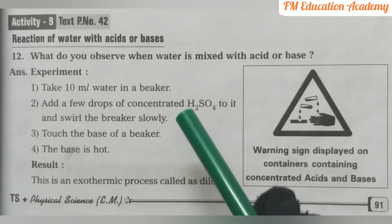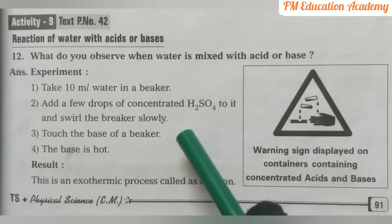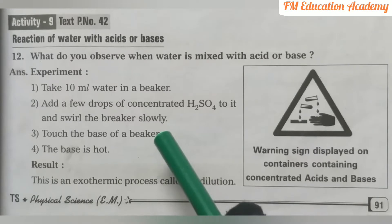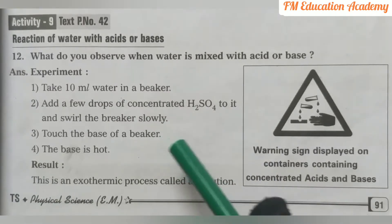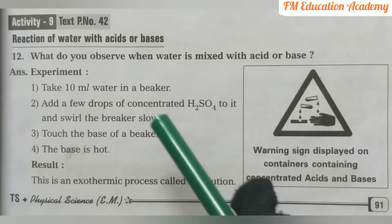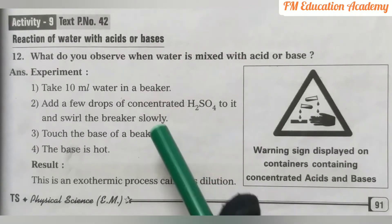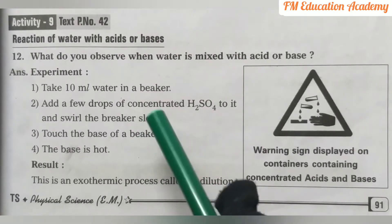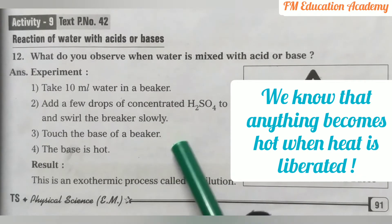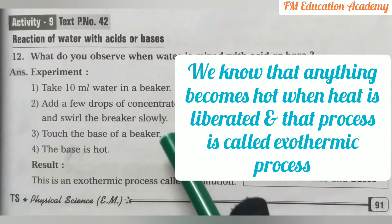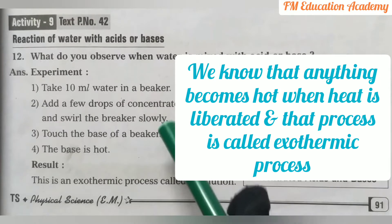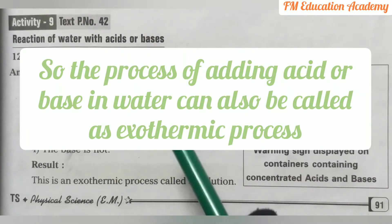We can use either a test tube or a beaker. When we touch the beaker or test tube, we observe that the base has become hot. Anything becomes hot when heat is liberated, and that process is called an exothermic process.